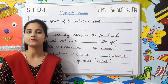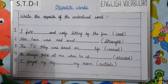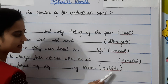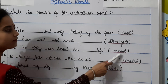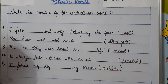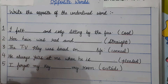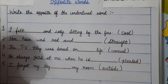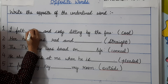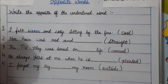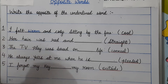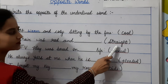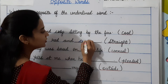Now let us do some exercises based on opposite words. Write the opposite of the underlined word. Number 1: I felt dash and cozy sitting by the fire. The opposite of cool will be warm. So the answer will be: I felt warm and cozy sitting by the fire. Number 2: her hair was red and dash. The opposite of straight will be curly. So you will write down curly.